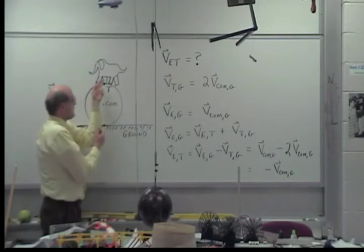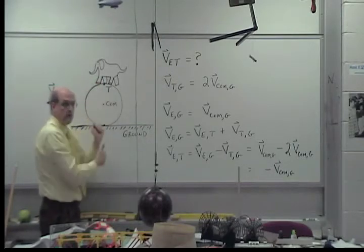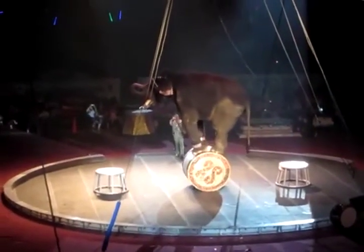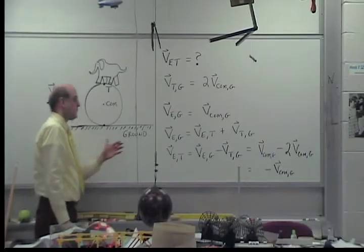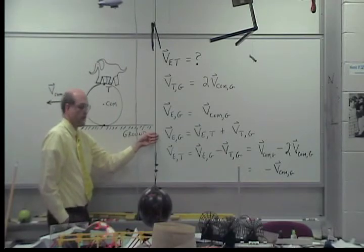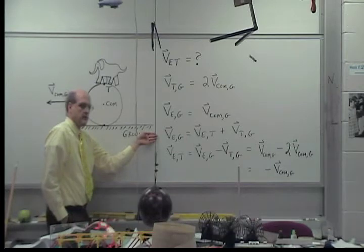That's so that the elephant keeps up with the barrel and doesn't fall off. We use the Galilean transformation to relate the velocity of the elephant relative to the ground, to the velocity of the elephant relative to the top of the barrel, to the top of the barrel relative to the ground.